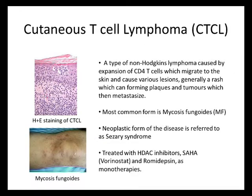HDAC inhibitors are used clinically for a particular disease called cutaneous T-cell lymphoma — a relatively rare disease which involves an expansion of CD4 T-cells under the skin. The skin mostly exhibits itself as a rash called mycosis fungoides, but this can become metastatic to form something called Sézary syndrome, and that's treated as a monotherapy with HDAC inhibitors, which appears to be relatively effective.